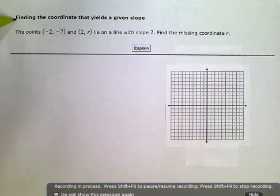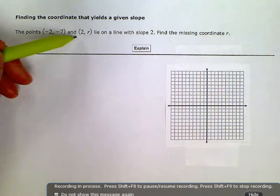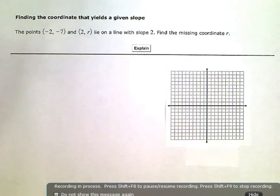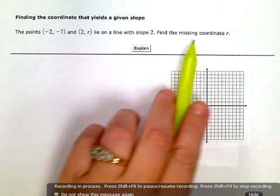Finding the coordinate that yields a given slope. The points (-2, -7) and (2, r) lie on a line with slope 2. Find the missing coordinate r.